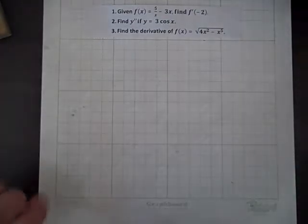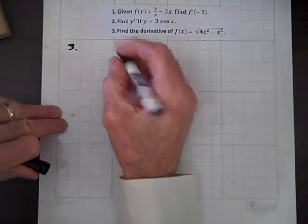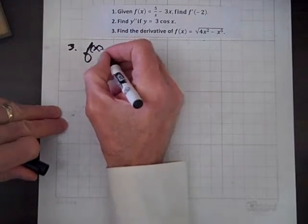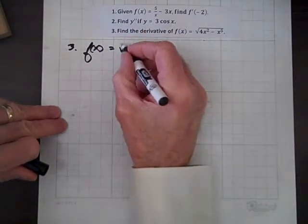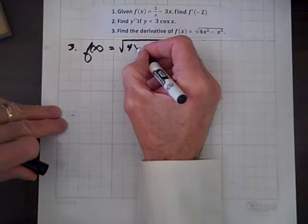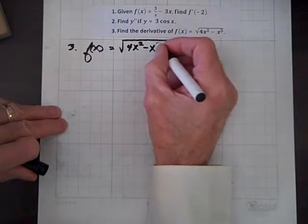Well, we're down to our third problem, and that is we have to find the derivative of f of x, which equals the square root of 4x squared minus x to the fifth.